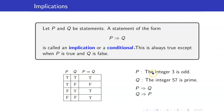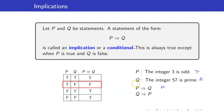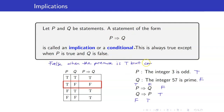For example, our premise is that the integer 3 is odd and our conclusion is that the integer 57 is prime. Let us determine the truth values of P implies Q and Q implies P. P implies Q is false because the premise is true but the conclusion is false. However, for Q implies P, the premise Q is false but the conclusion is true.